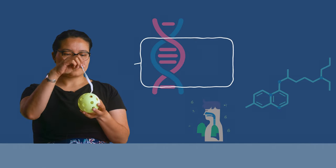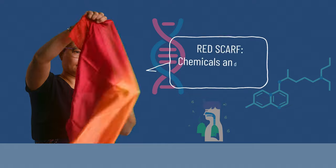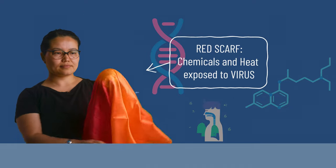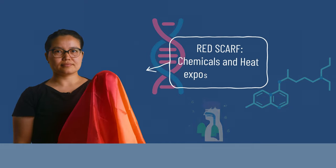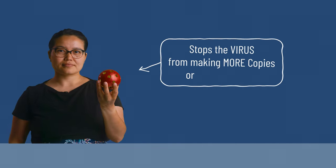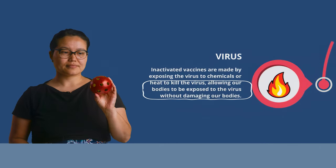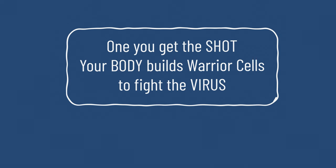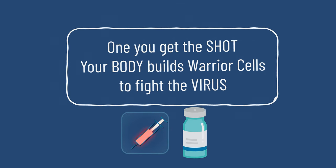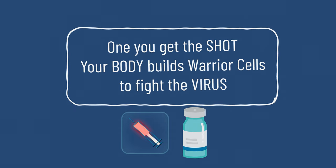Now that we've built a virus, let's see how to make a shot. These shots are made by exposing the virus to chemicals or heat to kill the virus. This process stops the virus's ability to make more copies of itself or cause disease. This allows our bodies to be exposed to the virus without damaging our bodies, and when you get the shot, your body is able to learn what the virus looks like and build warrior cells who are then on the lookout for the virus.